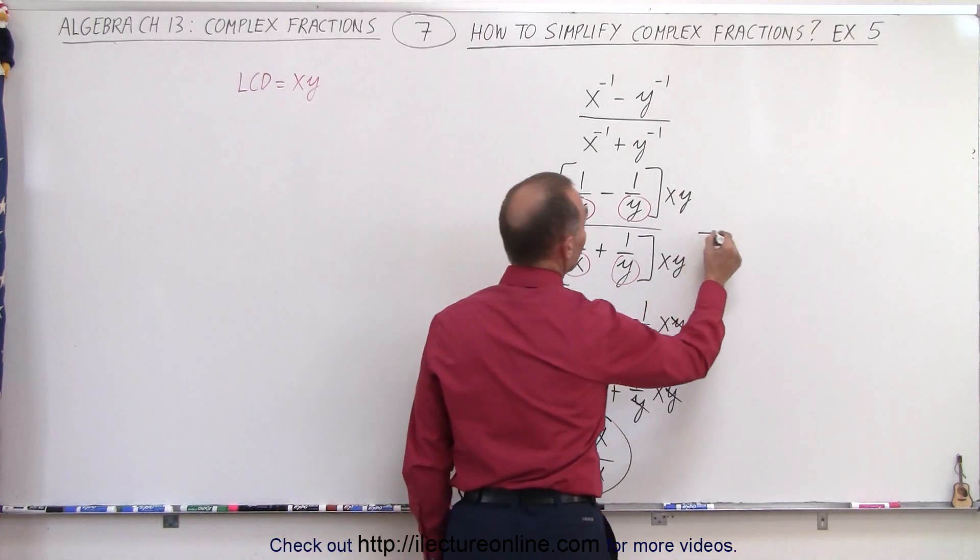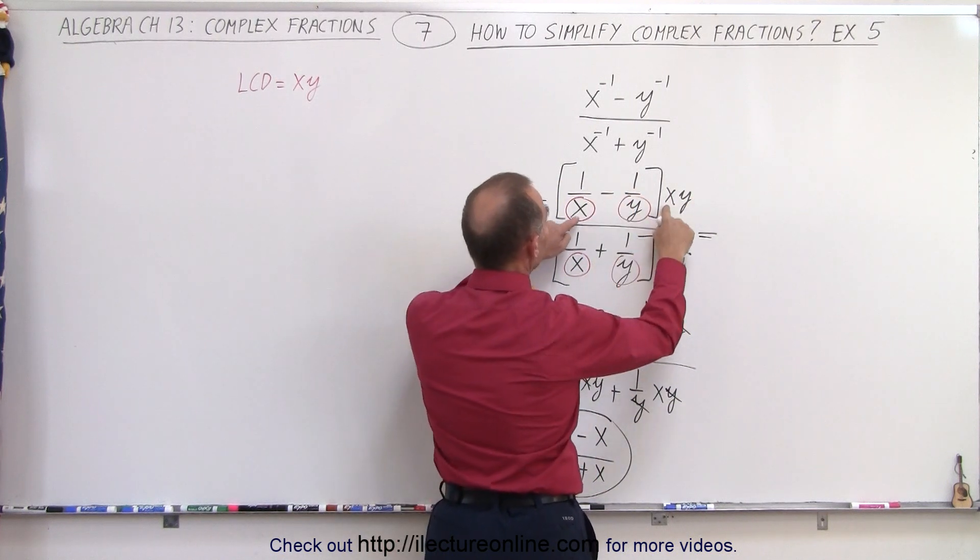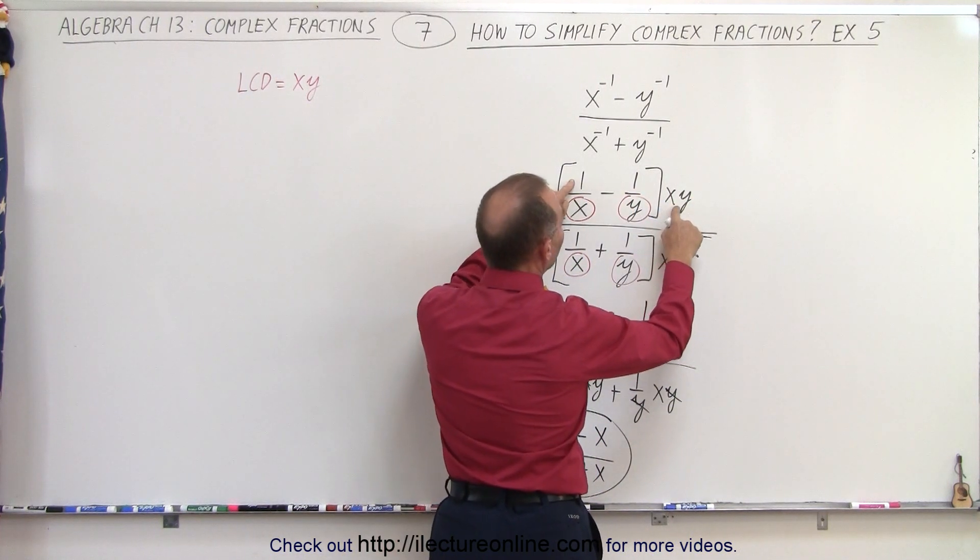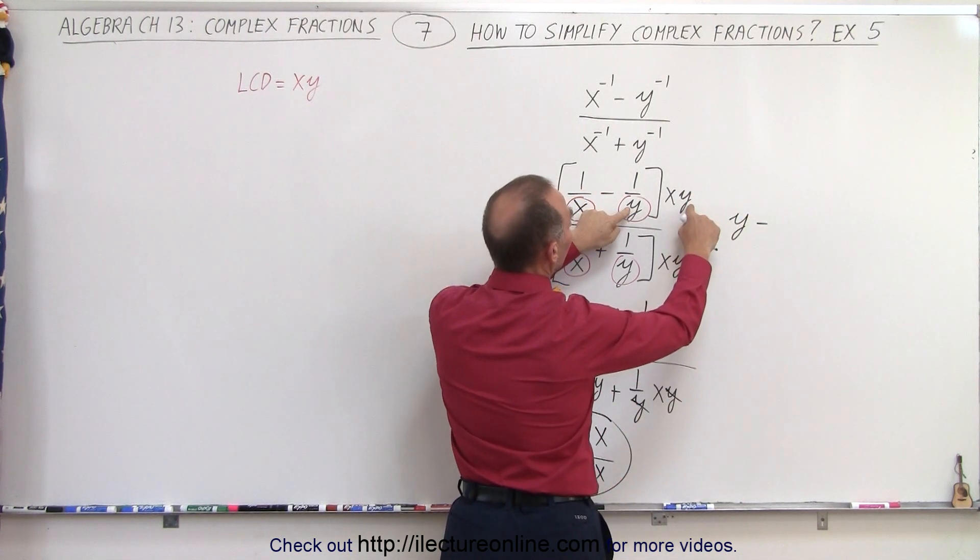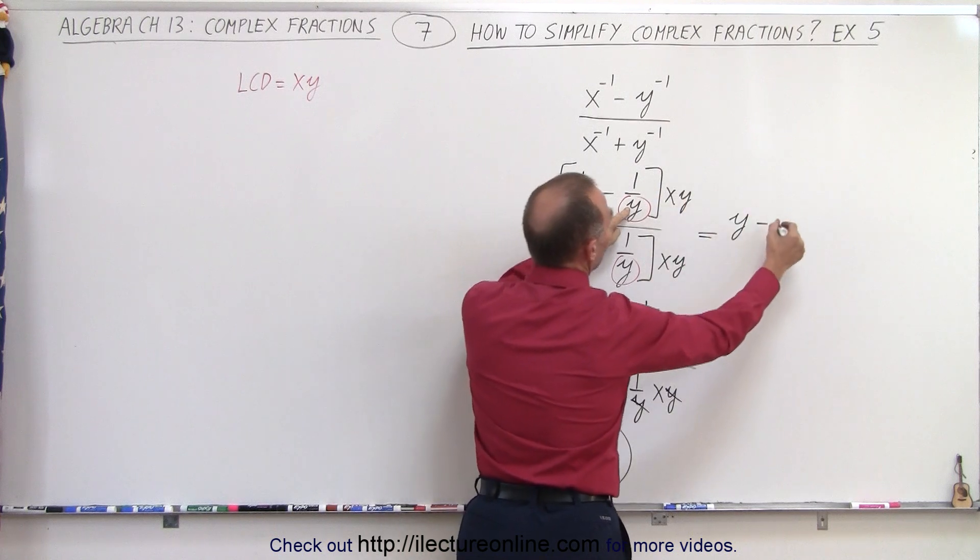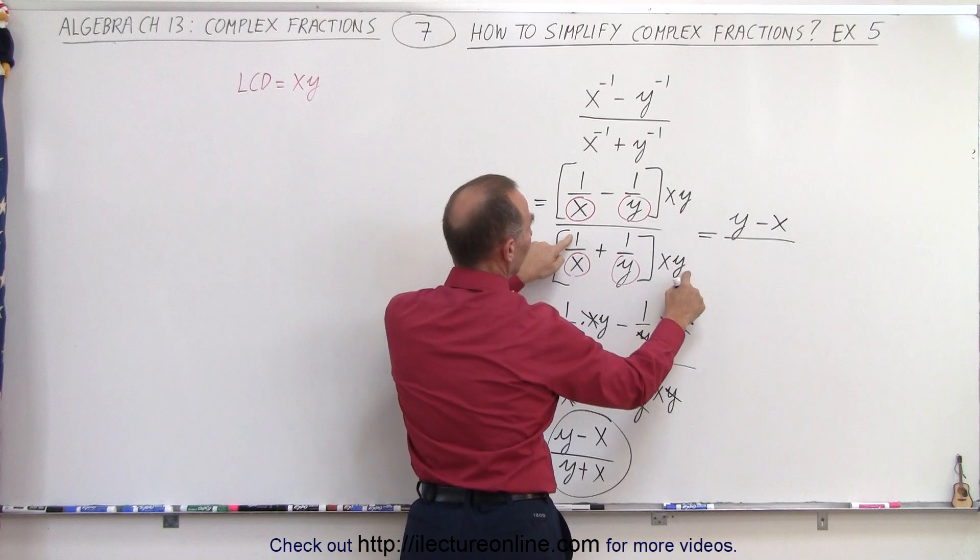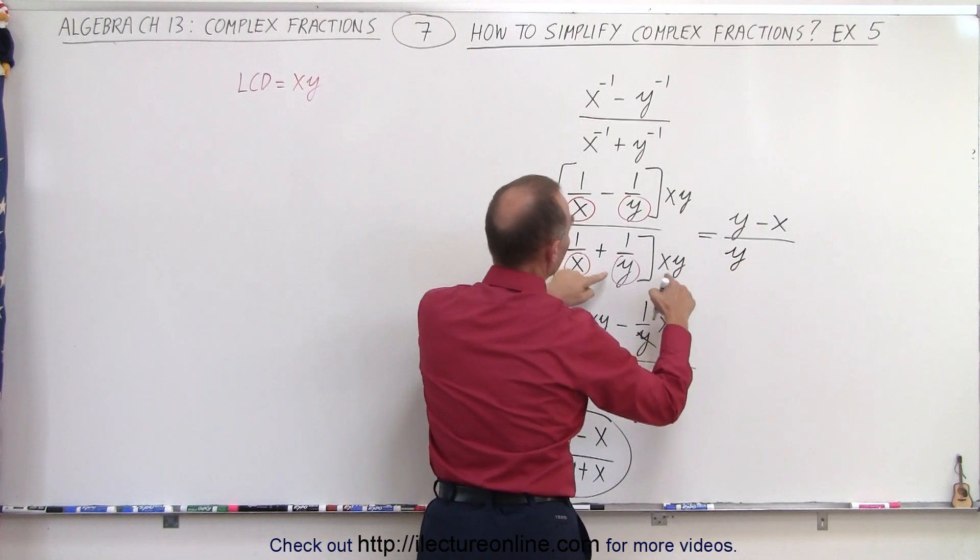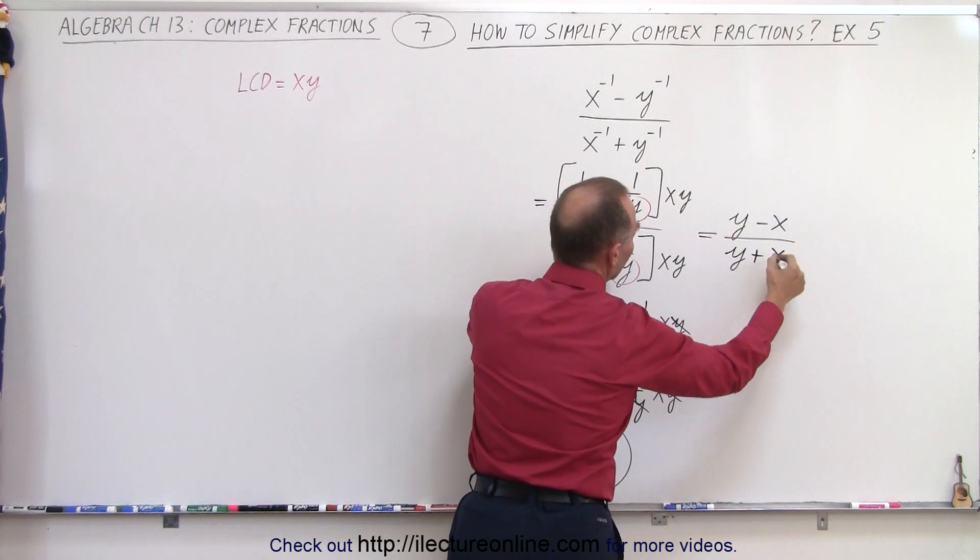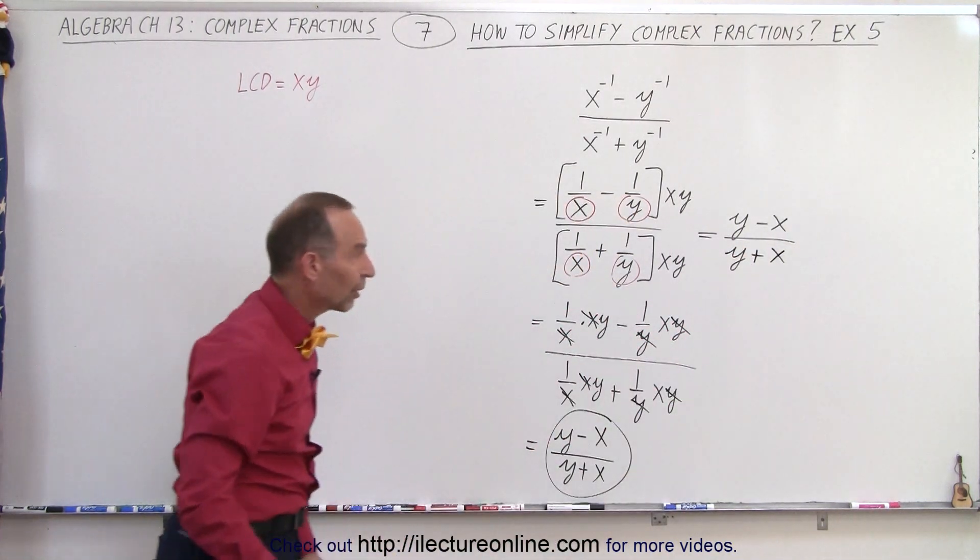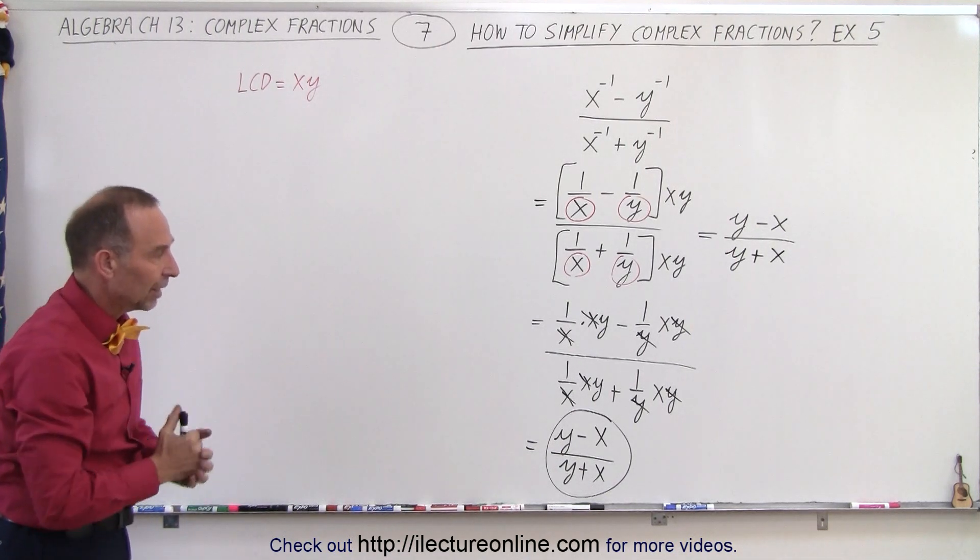Sometimes it's easier just to look at it and go, alright, when I multiply the x times y by 1 over x, the x's cancel out, and I'm left with 1 times y. Minus, here when I multiply these together, the y's cancel out, and I'm left with 1 times x. Here, when I multiply these together, the x's cancel out, and I'm left with a y. And here the y's cancel out, and I'm left with 1 times x. And so sometimes, very quickly, you can get to the final result without having to write out that intermediate step. And that is how it's done.